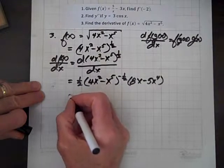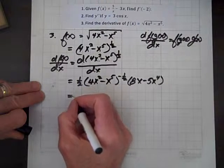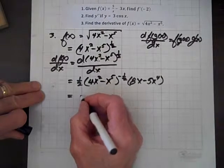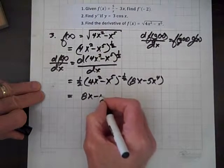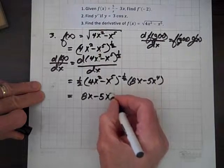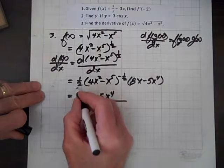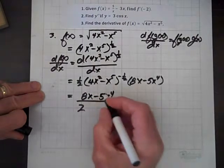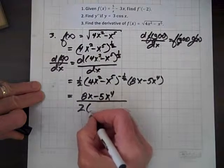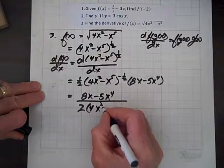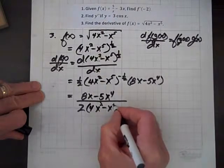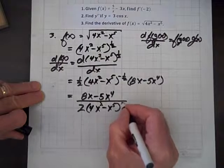Now let's consolidate. So upstairs we have an 8x minus 5x to the fourth. Downstairs we have our friend 2 there. We also have this 4x squared minus x to the fifth to the one-half.